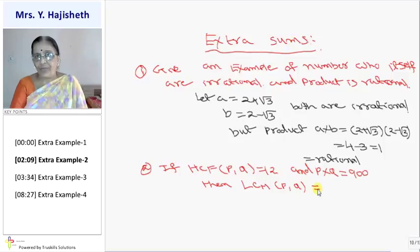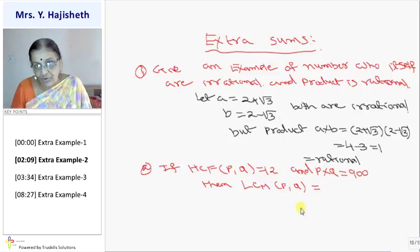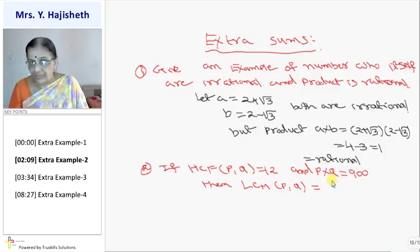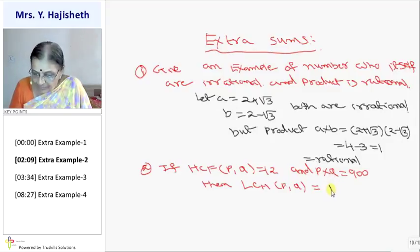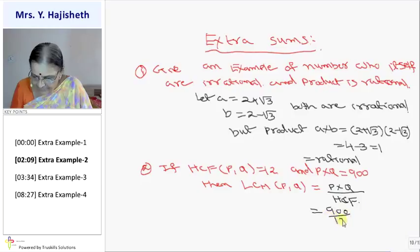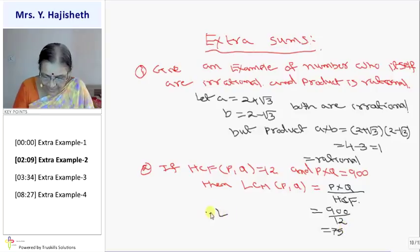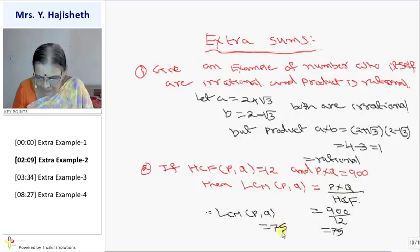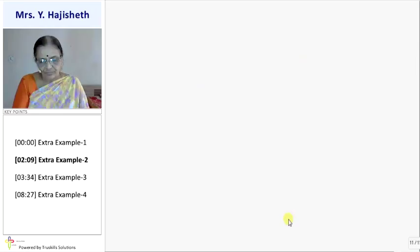Then what is LCM of P and Q? For that I can use the formula product of two numbers is equal to HCF into LCM. So LCM of any two numbers, this formula is only applicable when two numbers are given. For more than two numbers this formula is not applicable. LCM of P and Q is P into Q upon HCF of P and Q. So it is 900 divided by 12. 900 divided by 12 is 75. So LCM of P and Q is 75. That completes the sum.